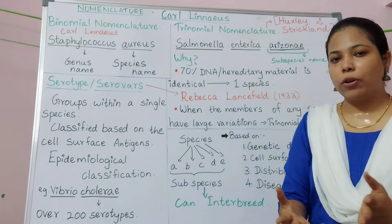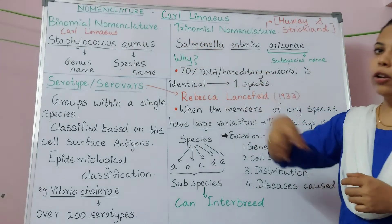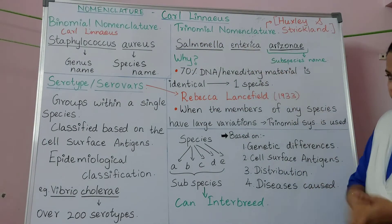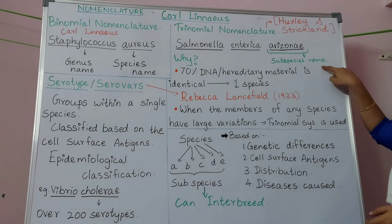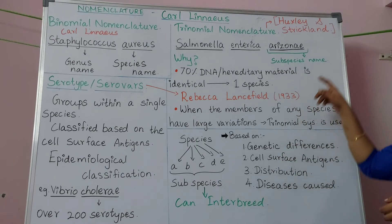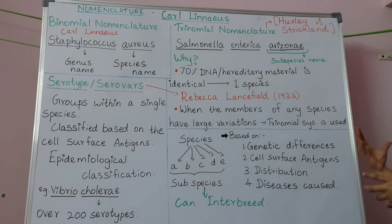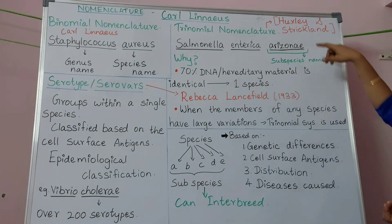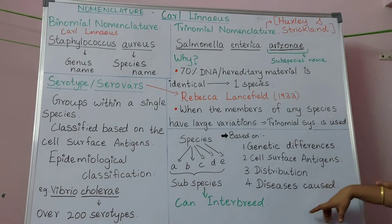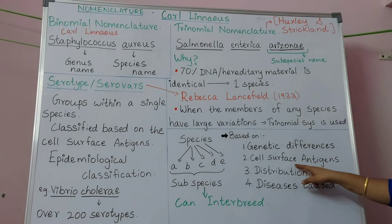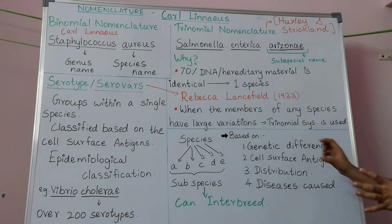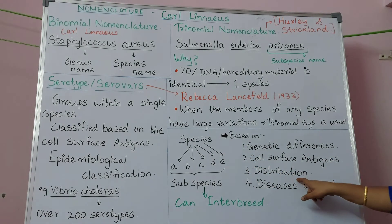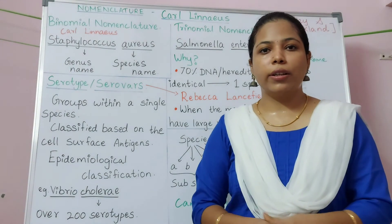To sum up: binomial nomenclature is the system of naming organisms with two scientific terms; trinomial nomenclature includes three scientific terms, where the third term is the subspecies name. The subspecies can interbreed and is known as serovar or serotype in microbiology. Trinomial nomenclature was introduced by Huxley and Strickland. Subspecies classification is done on the basis of genetic differences, cell surface antigen differences, distribution of the organism, and diseases caused by the organisms. Thank you for listening.